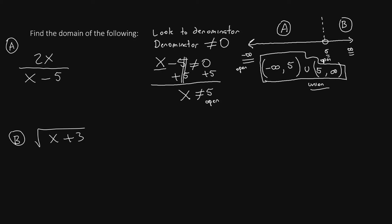Now, let's look at part B, square root of x plus 3. To find the domain of a square root function, we look to the inside of the square root function. The inside of a square root function cannot be negative, but it can be positive or 0.